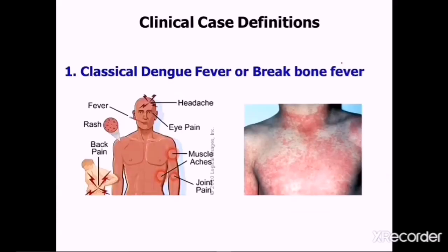The clinical case definition of classical dengue fever, also called break-bone fever, is an acute febrile illness of two to seven days duration with two or more of the following: headache, retroorbital pain, myalgias, rash, arthralgia, and mild hemorrhagic manifestations. As seen in the picture, a patient may present with a characteristic rash.